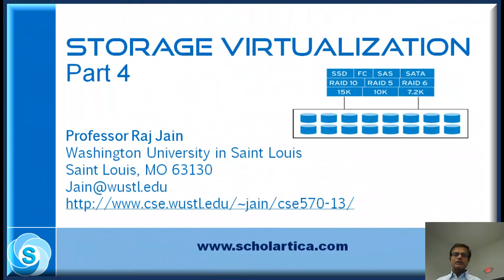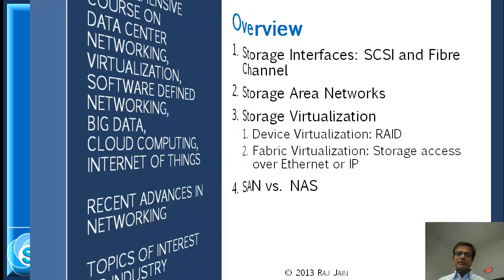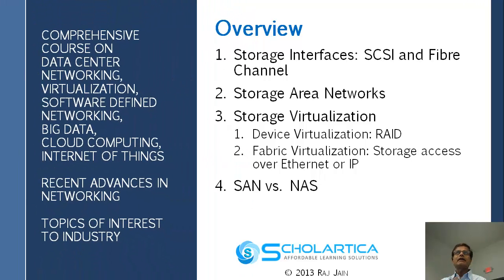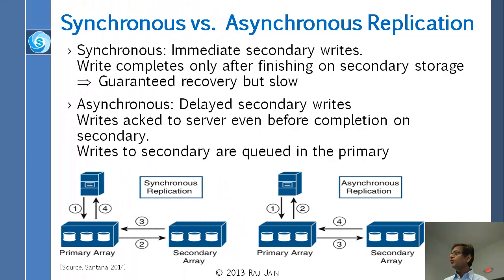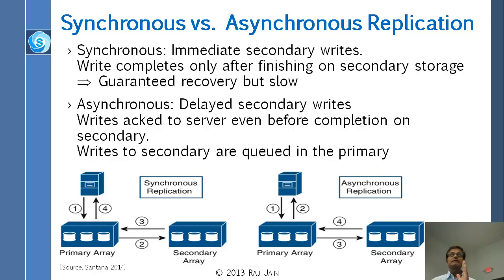We move on to synchronous versus asynchronous replication. Every time we say RAID or replication or mirroring, there are two choices. One choice is synchronous, which means that when somebody asks you to write, you write the primary copy and you write the secondary copy. Only when the secondary copy is written do you tell the client the job is finished. That is called synchronous, or immediate write.